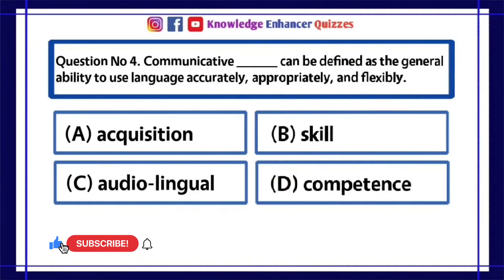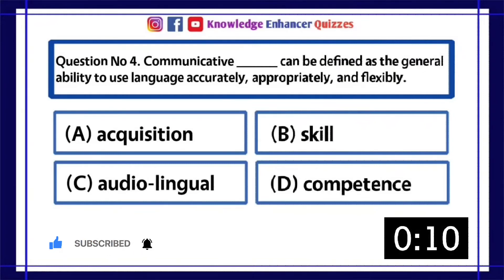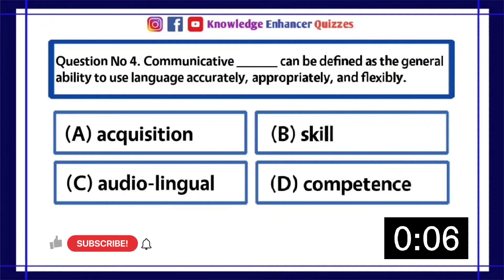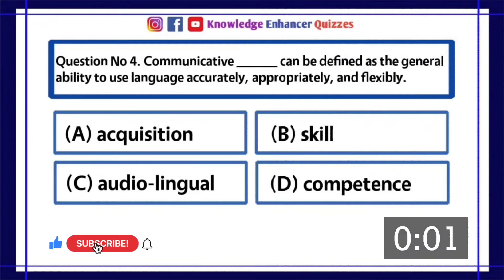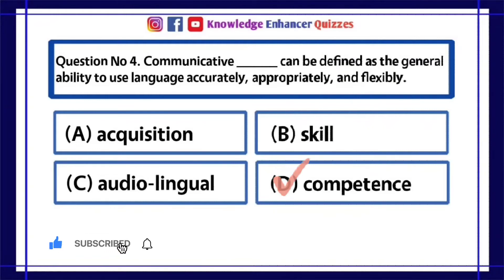Question Number 4: Communicative dash can be defined as the general ability to use language accurately, appropriately, and flexibly. A. Acquisition, B. Skill, C. Audiolingual, D. Competence. Option D is the right answer.